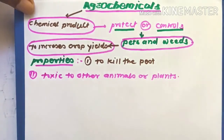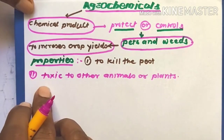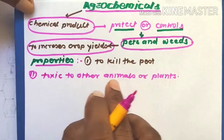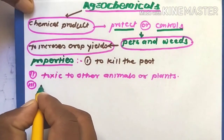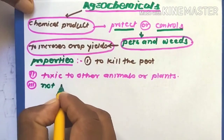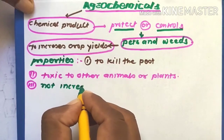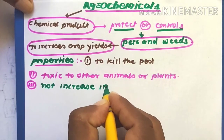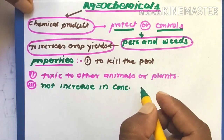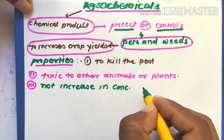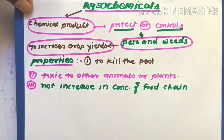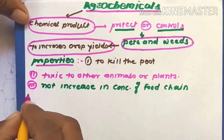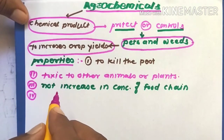They should not be toxic to other animals or plants. They should not increase in concentration with each level of the food chain — that is, they should not bioaccumulate through the food chain.